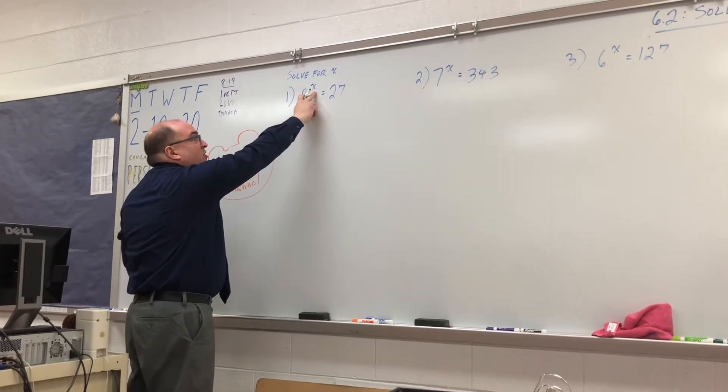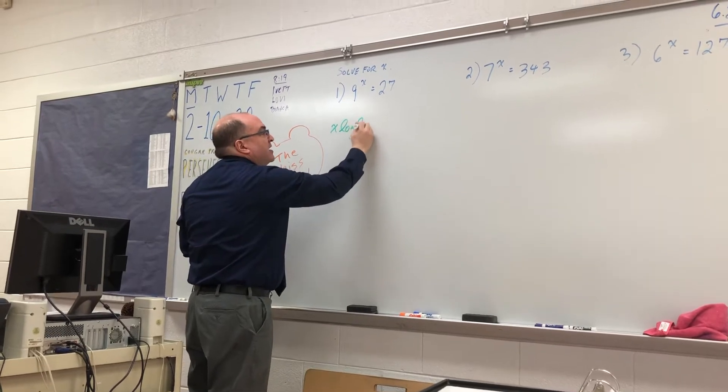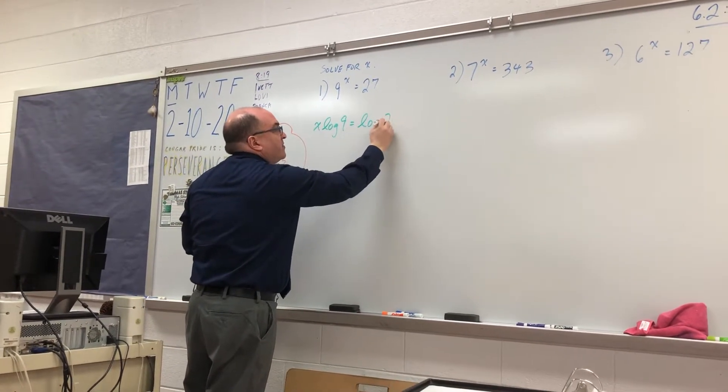You bring the x down. It comes down like this. It's x log 9 equals log 27.